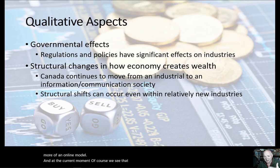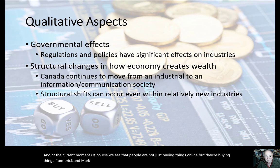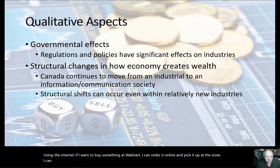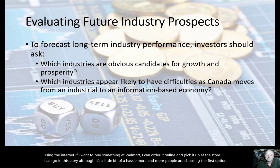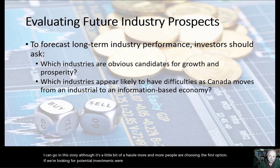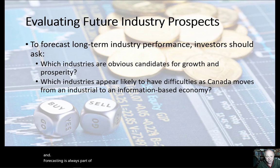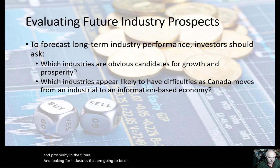There may also be changes in the way the economy works. We've moved from an industrial to an information society. Industries like retail have changed from a bricks-and-mortar model and slowly evolved into a more online model. At the current moment, people aren't just buying things online but buying from brick-and-mortar locations using the internet. If I want to buy something at Walmart, I can order it online and pick it up at the store — more and more people are choosing that first option.